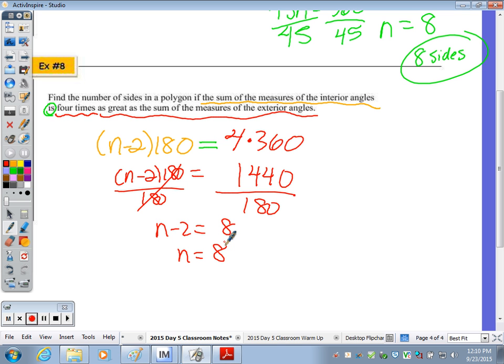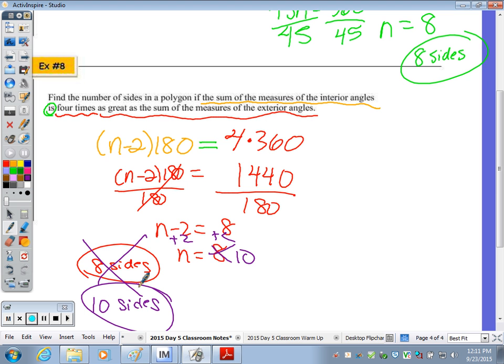Add the 2 and n equals 8. So find the number of sides, we have 8 sides. It is not 8, thank you for correcting me. Plus 2 is 10, so we have 10 sides. The polygon would be a decagon.